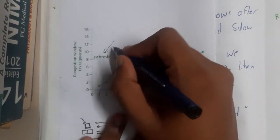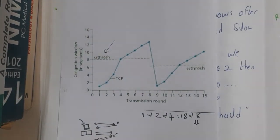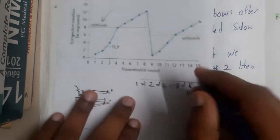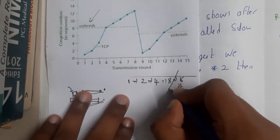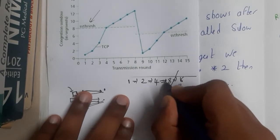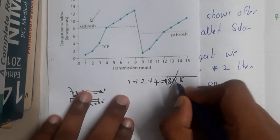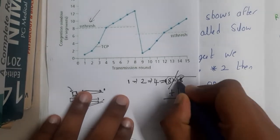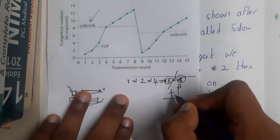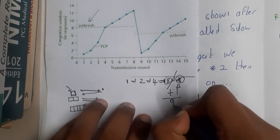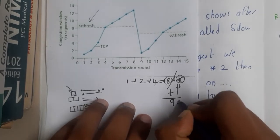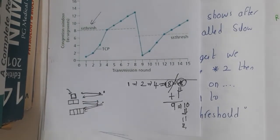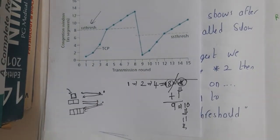So we have a threshold called the SS threshold, or simply the threshold. In our example the threshold is eight. Once you reach eight, you will not double anymore — you increment by one instead. So instead of sending 16 packets, you send nine, then ten, then eleven, then twelve, and so on.